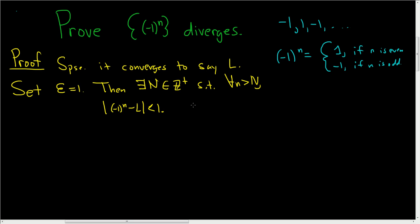So we know the problem with this sequence is that it bounces back and forth between negative 1 and 1. We know that if n is even, it's 1, and if n is odd, it's negative 1. So let's pick some obvious integers that we know are odd and even. So note, |(-1)^(2n) - L|.